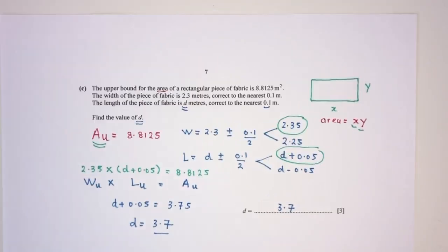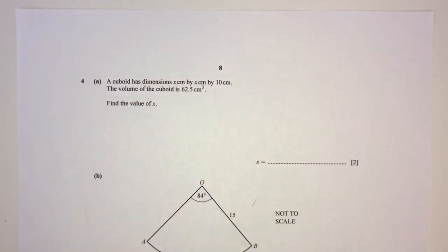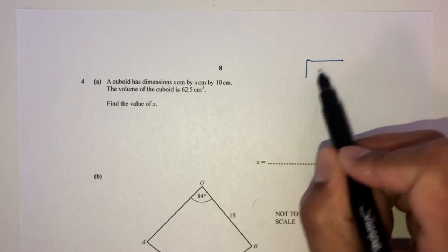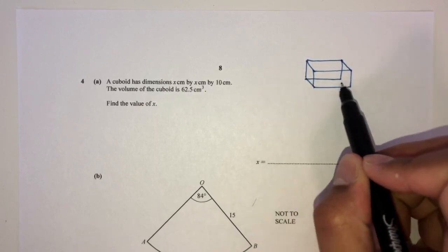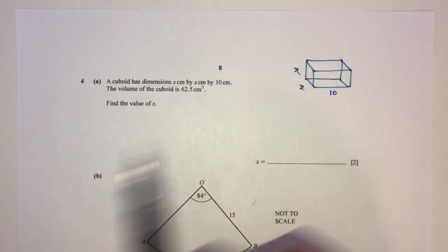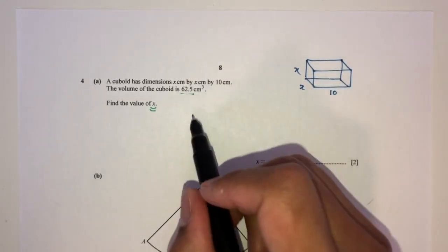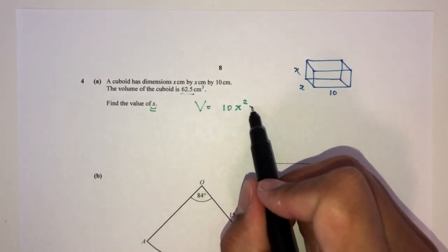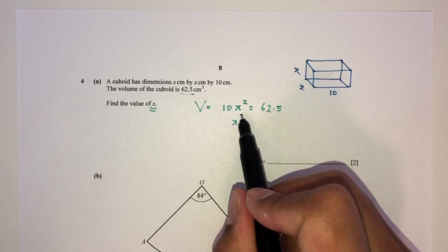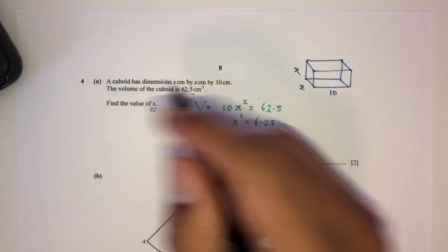Now question four part A: a cuboid has dimensions x by x by 10, and its volume is 62.5. The volume of a cuboid is length times width times height, so x squared times 10 equals 62.5. Therefore x squared equals 6.25, and x equals the square root of 6.25, which is 2.5.